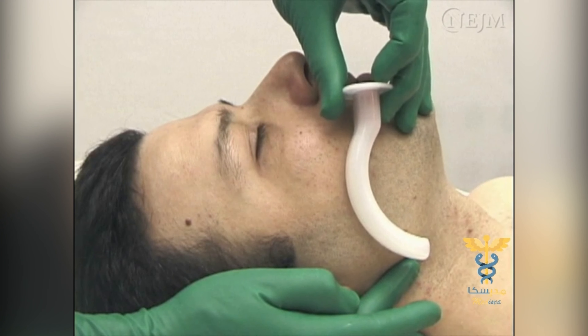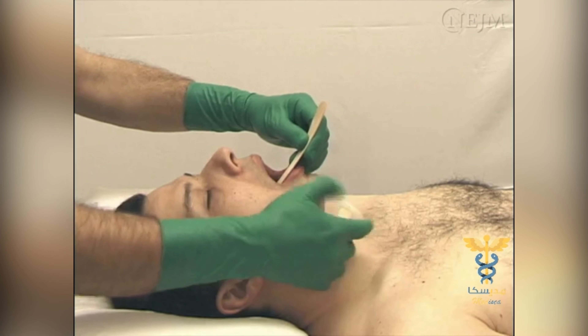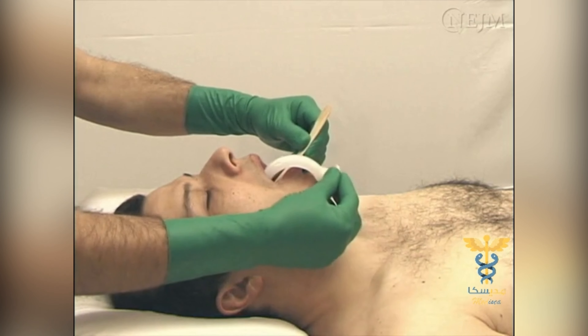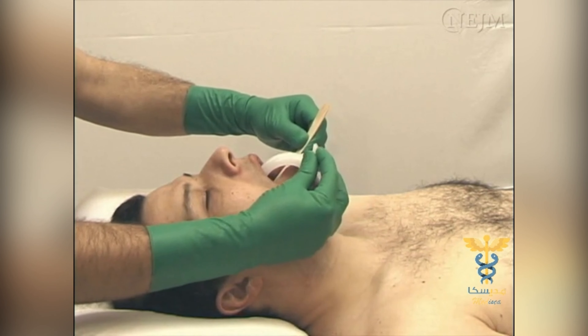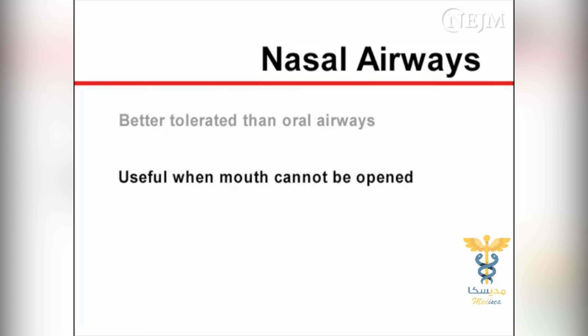It may be difficult or impossible to maintain an adequate seal using only one hand. This challenge can occur in obese or edentulous patients, or in those with abundant facial hair. Additionally, large patients may present a challenge for individuals with small hands or with insufficient manual strength or dexterity. In these situations, the mask can be held with two hands, with each hand positioned as described in the one-hand technique, and a second person compresses the bag valve device.